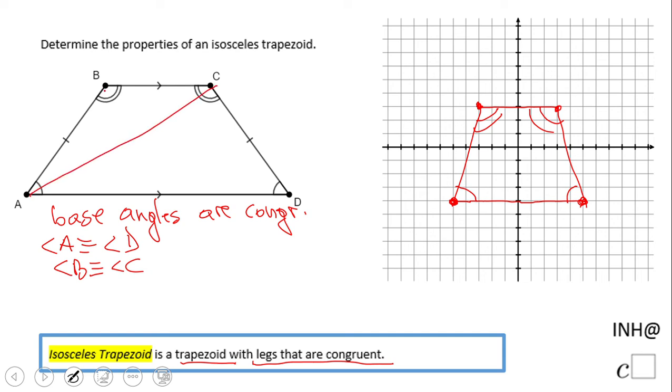If you have a ruler, that will be even better. This is the second property: the diagonals BD and AC are congruent. Very important—the diagonals of an isosceles trapezoid are congruent.